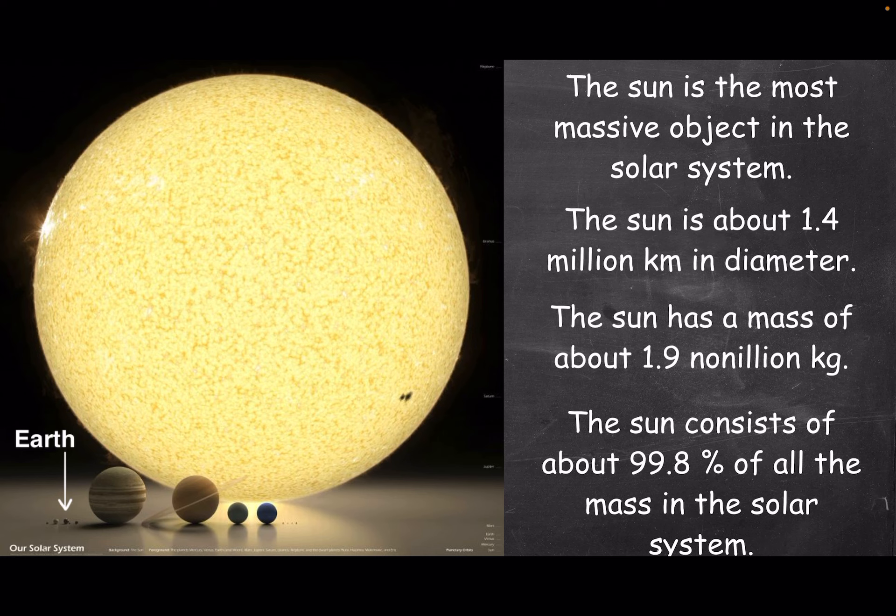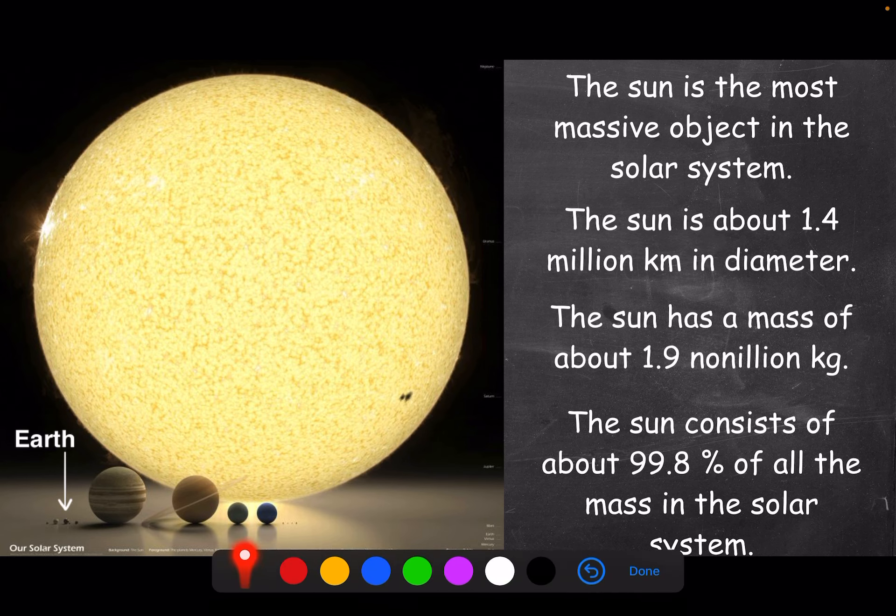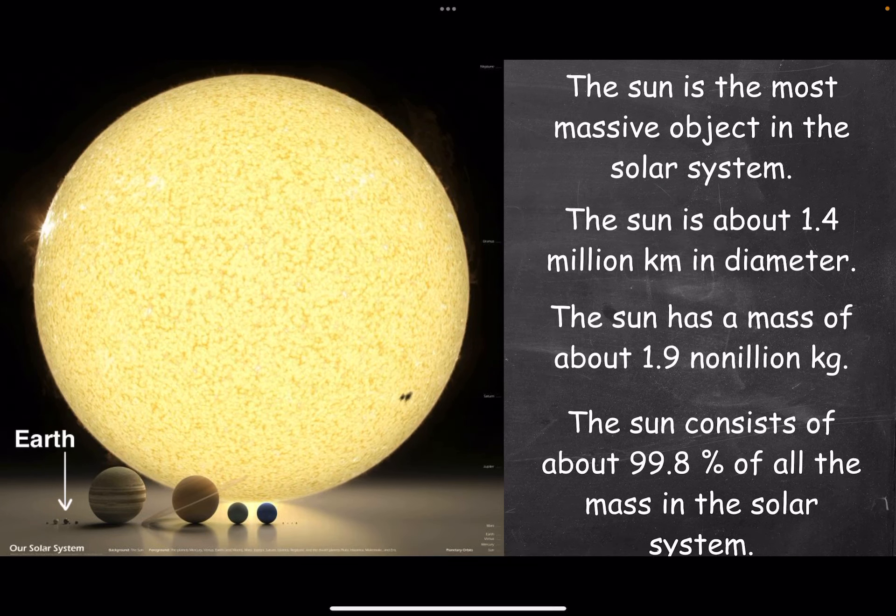All the asteroids in the asteroid belt and everything in between, including all of us on planet Earth. That's only 0.2%. The Sun takes everything else. And that's hard to believe at first, but if you just look at the size of the Sun, it becomes a bit easier to understand why it takes almost all the mass.